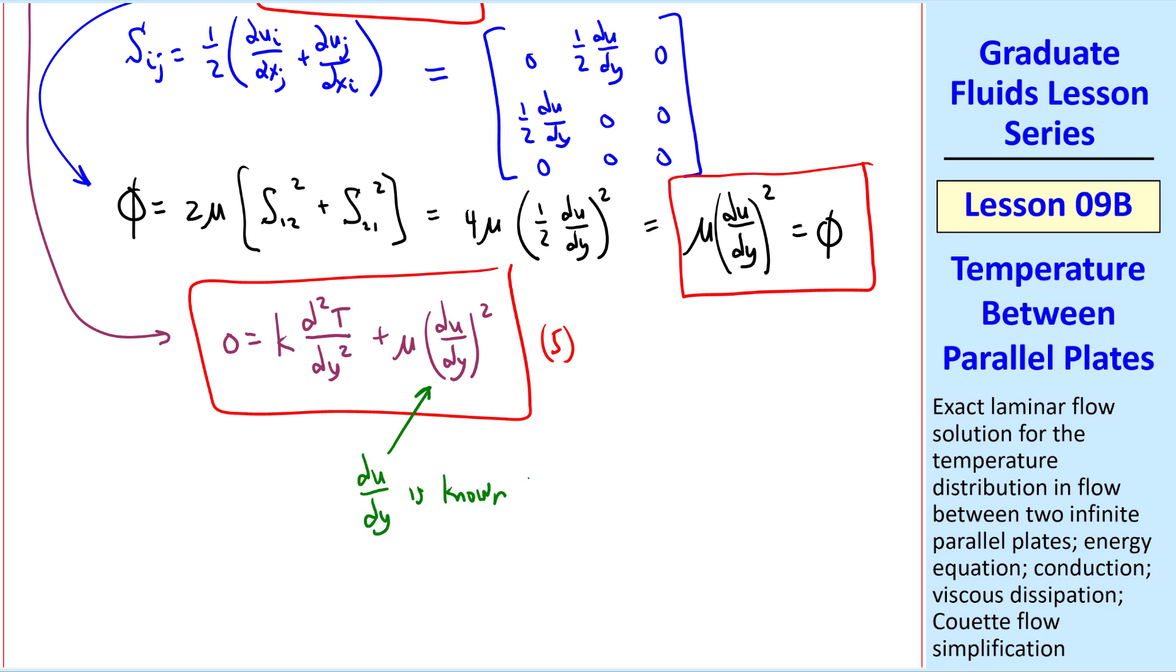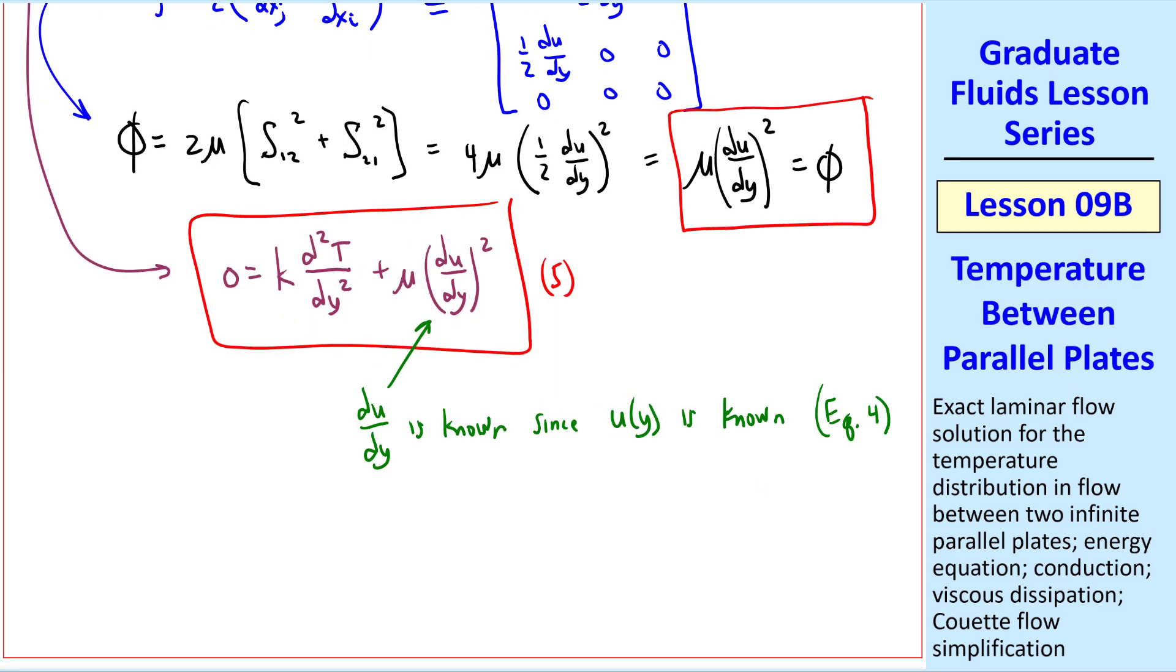Just to comment here, in this problem, du dy is known since we know u of y, which comes from our equation 4. And note that the energy equation was not needed to solve for the velocity field, or the pressure field, but u of y, and the value of del p del x, which is a constant, are needed to solve for the temperature field.